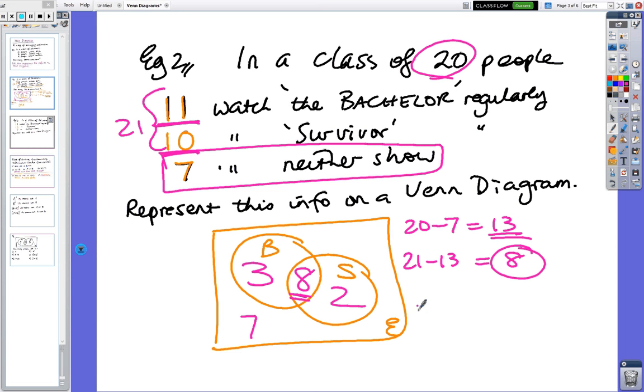We'll do it properly, but say the probability of someone watching Survivor is 10 out of 20, which is a half, but the probability they watch both would be 8 out of 20, which equals two-fifths. So we'll do this on a proper video, but that's just how you could lead on to other questions.